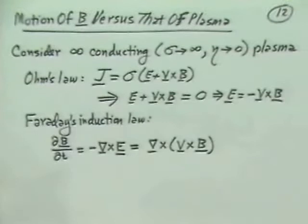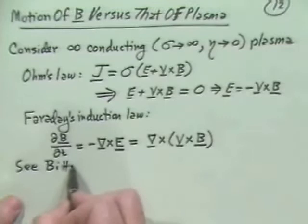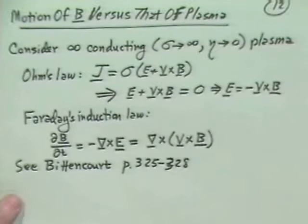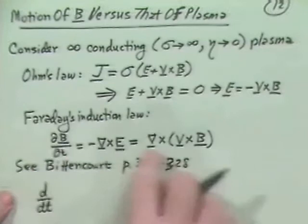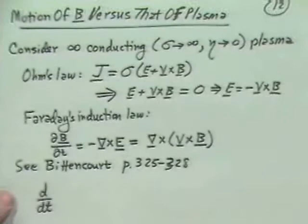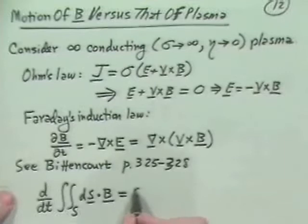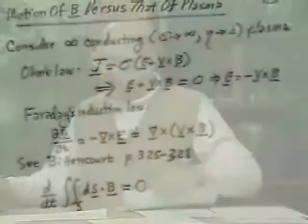So this says physically that if the plasma flows in a magnetic field, this is the equation governing how the magnetic field changes. That's kind of an ugly form. But what you can show, and this is in Bittencourt page 325 to 328, is that if I consider this equation of motion for magnetic field lines and integrate those field lines over some surface, this is equal to zero. This is called the frozen flux theorem.